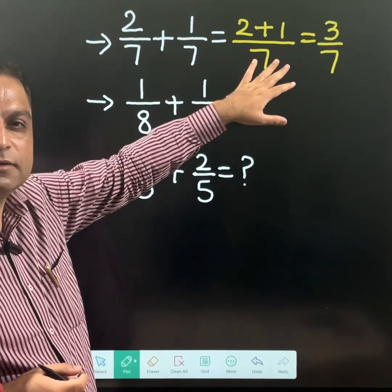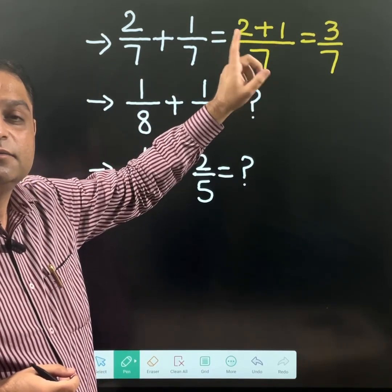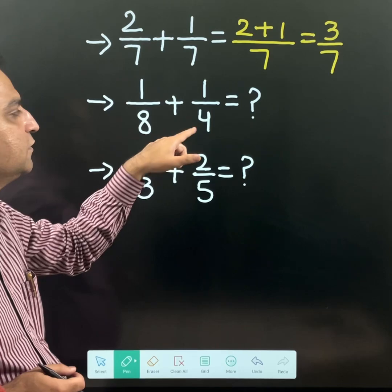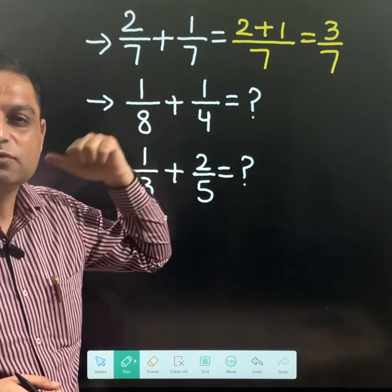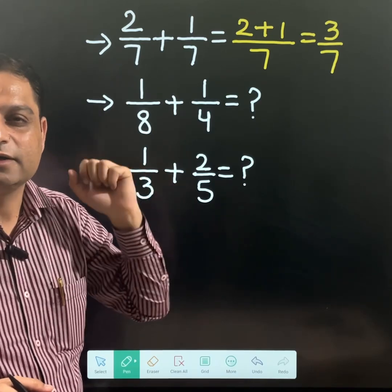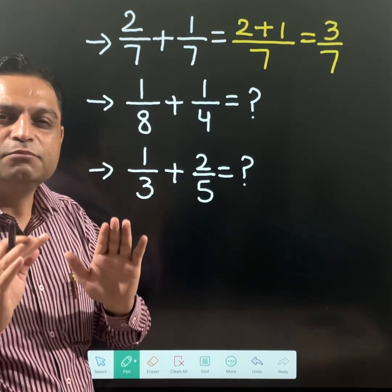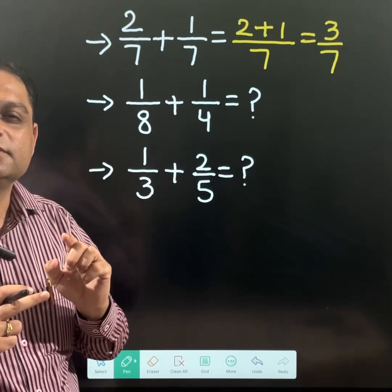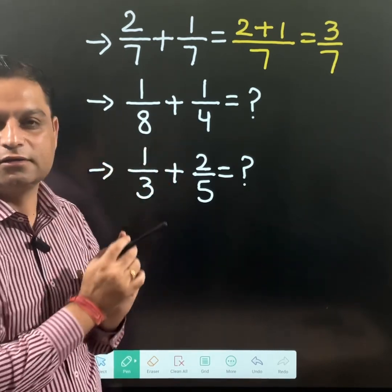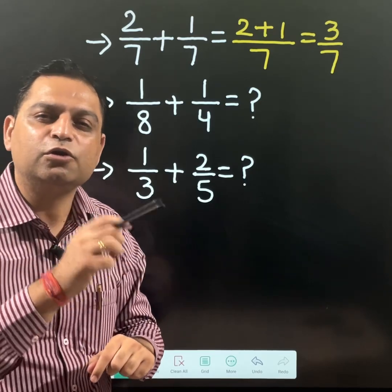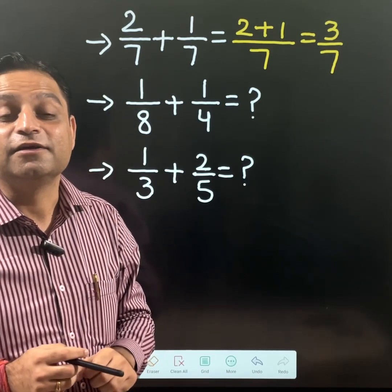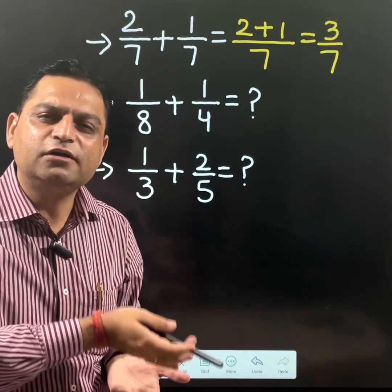This is easy, but the problem arises when this type of question starts: 1 over 8 plus 1 over 4. What to do at that time? The very important point to understand is why am I facing difficulty here? I am facing difficulty because the denominator is not the same. Then what are we doing? Let us make the denominator the same then.